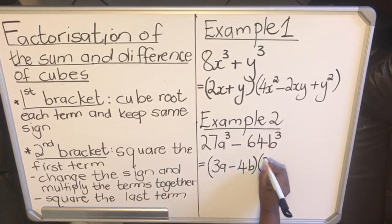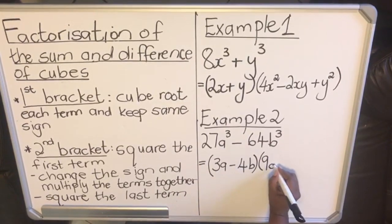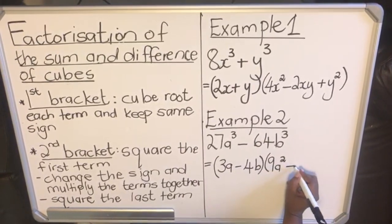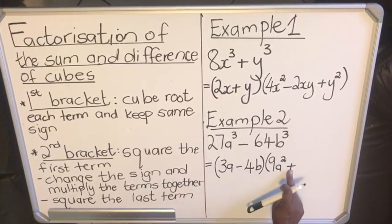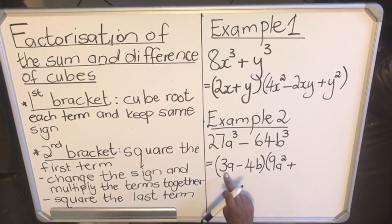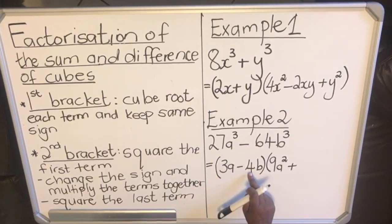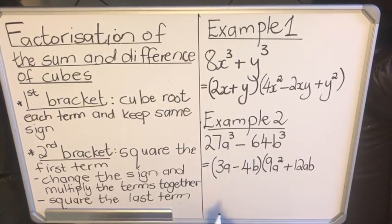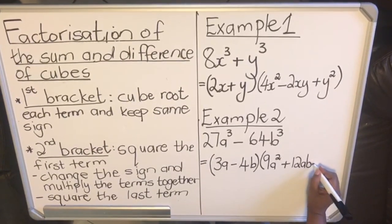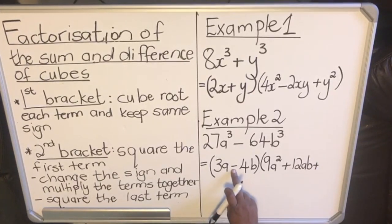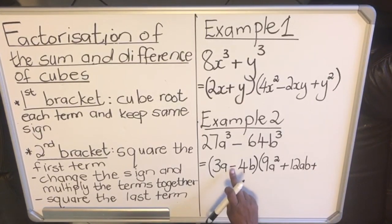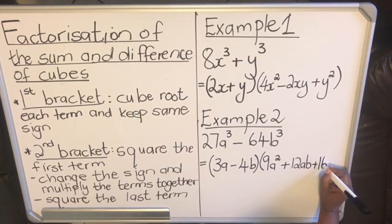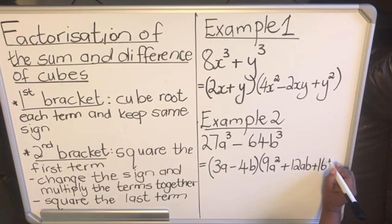With the second bracket they say square the first term, so 3a times 3a - 3 times 3 is 9, a times a is a². Then we change the sign - positive. The sign is negative so you're going to have positive. And then multiply the two terms - 3 times 4 is 12ab. And then the last term is always going to be positive because you are multiplying the same thing - negative times negative is positive. 4 times 4 is 16 and b times b is b².